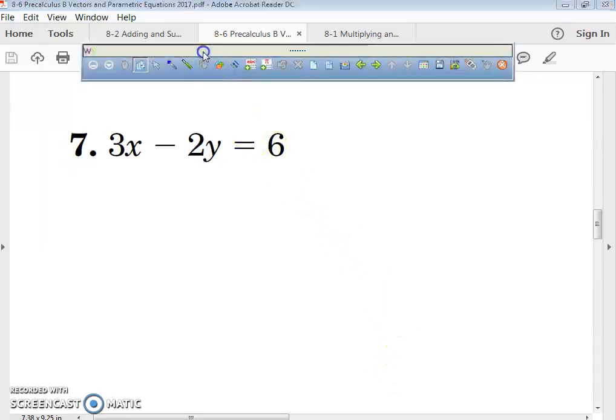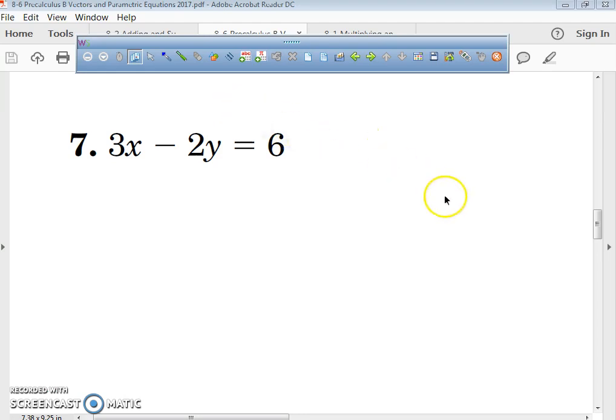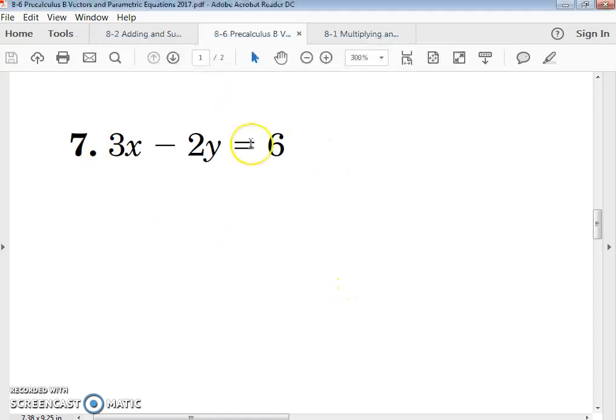All right, what we're going to be doing is we're still working in Chapter 8, Section 7, with vectors and parametric equations. This right here is just a basic linear function. We're going to take this linear function and change it into what's called a parametric equation.